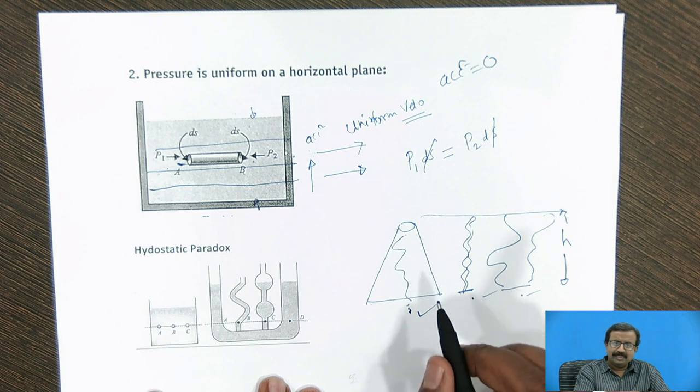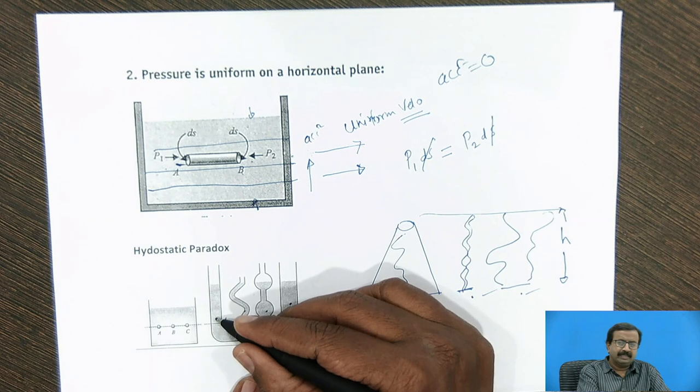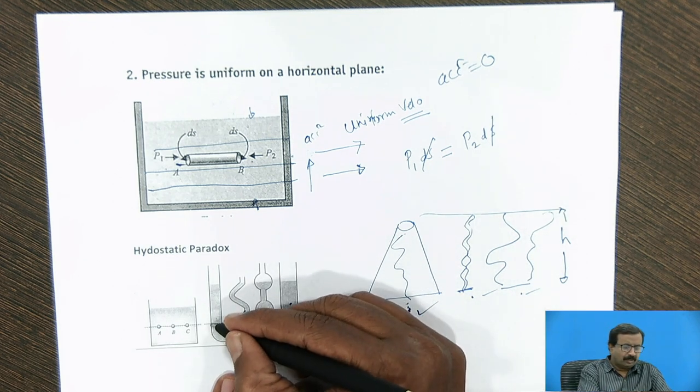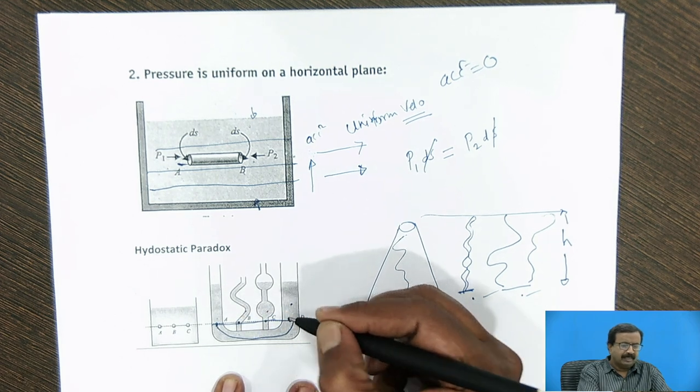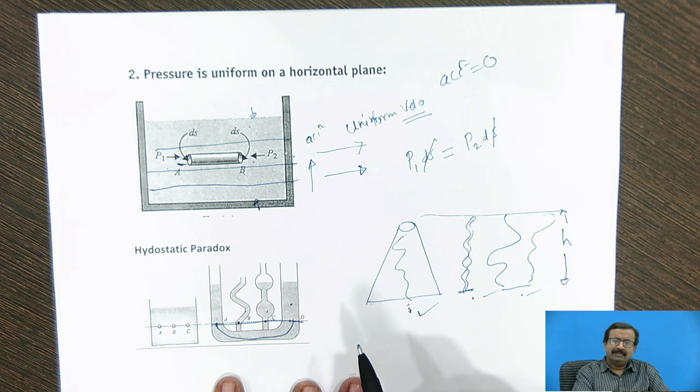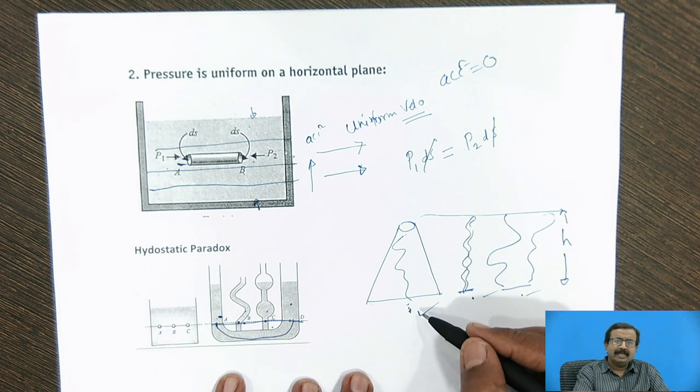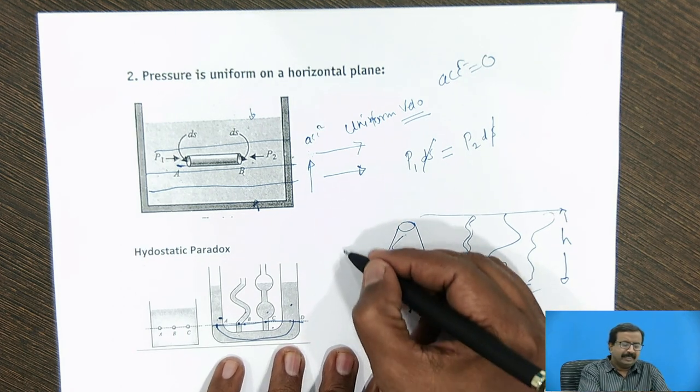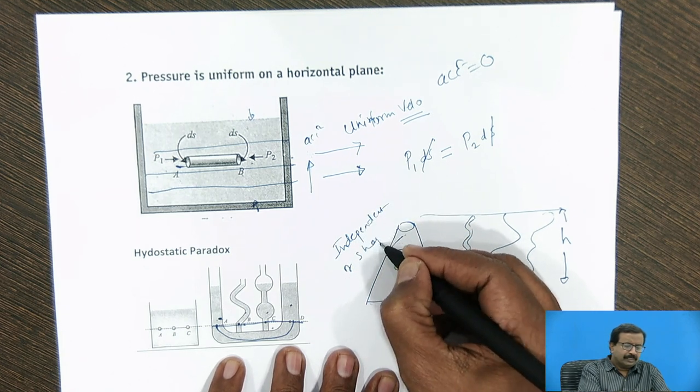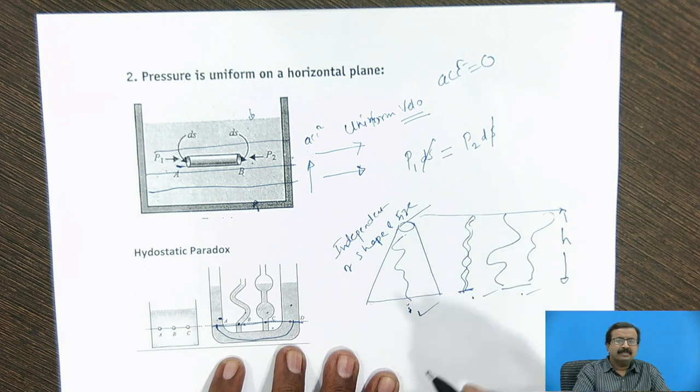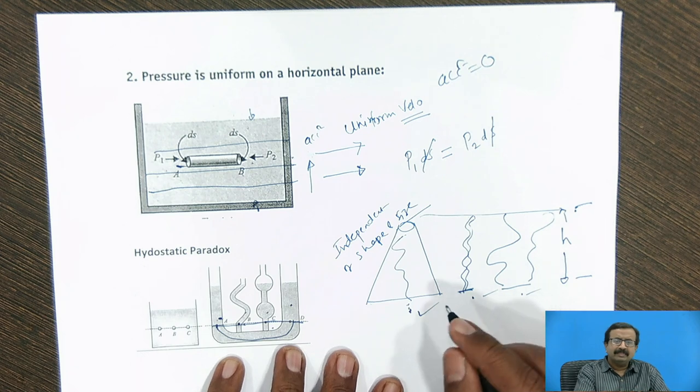So pressure along the horizontal line is same, provided you are using same liquid. It means suppose I take one liquid here, another liquid here, another liquid here, then pressure is not same. So whenever I draw a line like this, and if I am sure that when I pass from this point below this up to this point, and the fluid is same fluid, then automatically I get the same pressure everywhere. Because pressure is independent of the shape and size. It is very important, independent of shape and size. It depends only on the height.